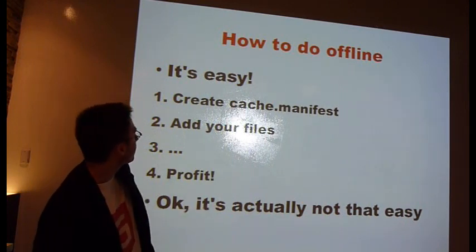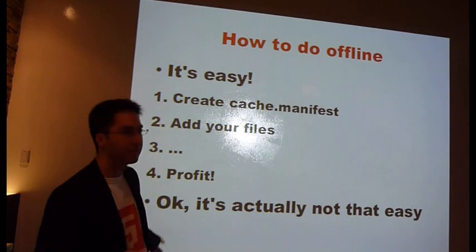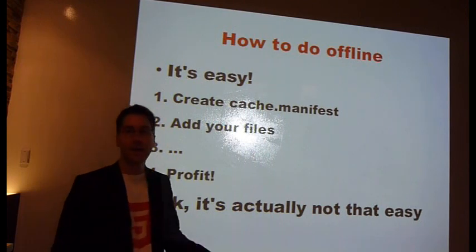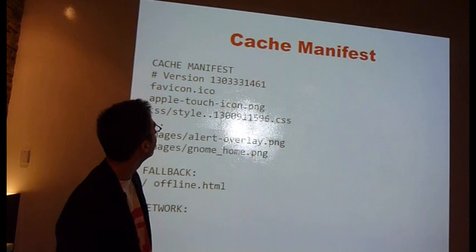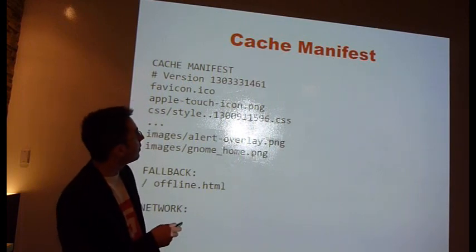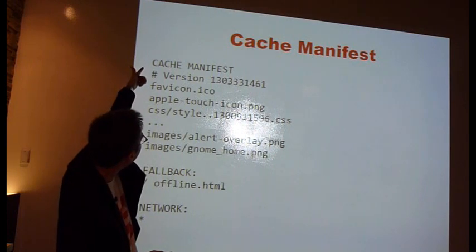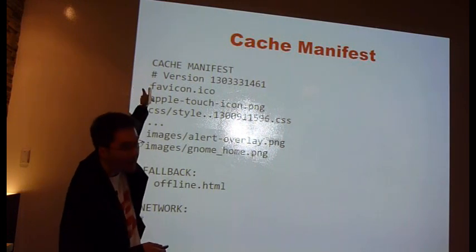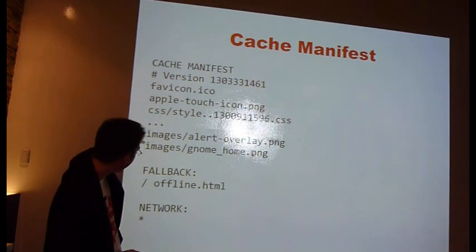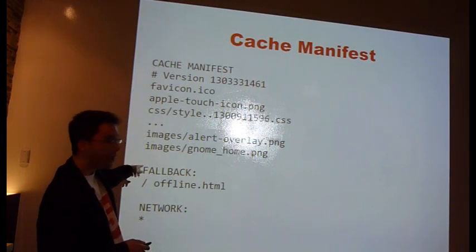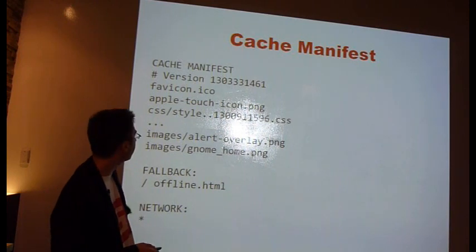So how do you do it? Just create a cache manifest file and add your files — okay, actually that's not that easy. This is an example of a cache manifest file. It starts with 'cache manifest'. You don't have to have a version, but you'll see why that's important later. Then all your files. And then there's a fallback section and a network section, which I'll explain in a minute.